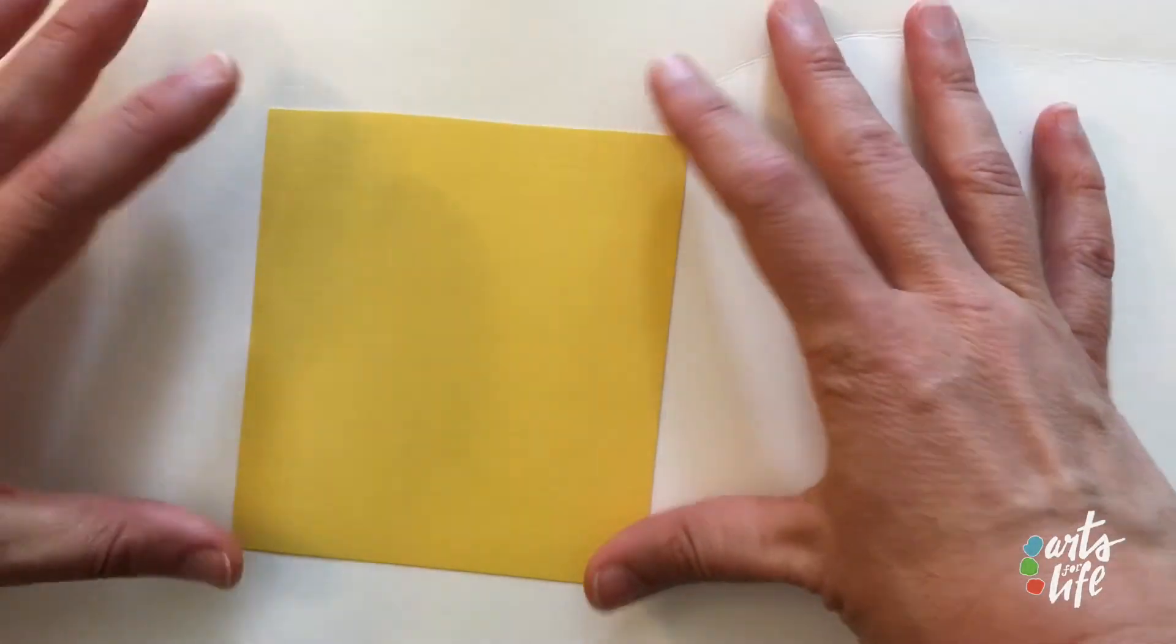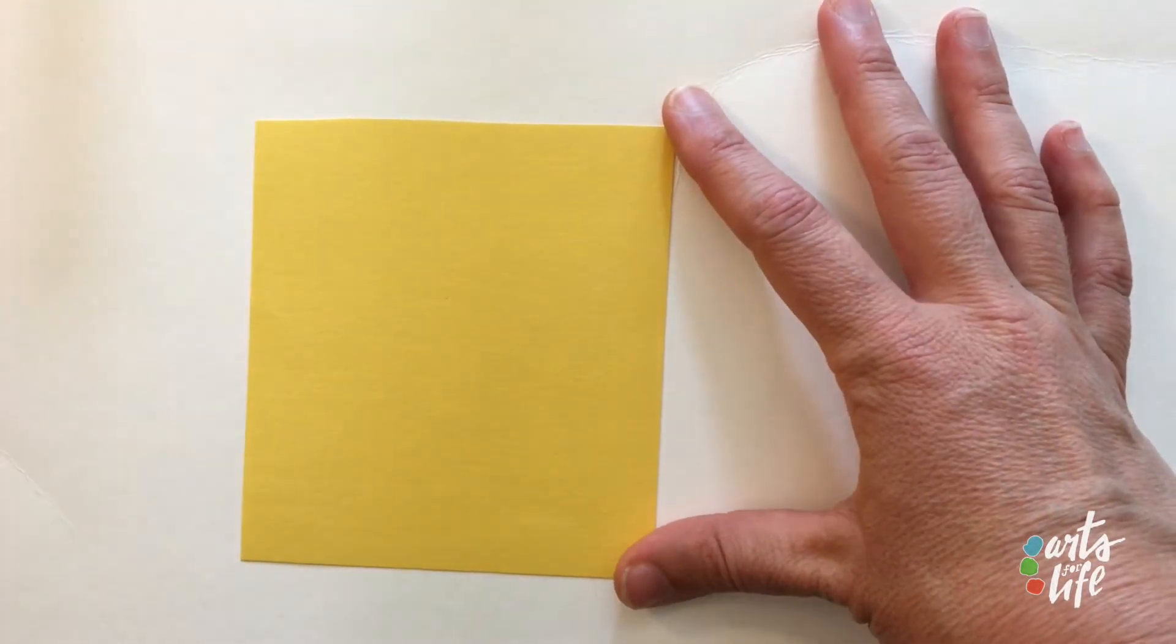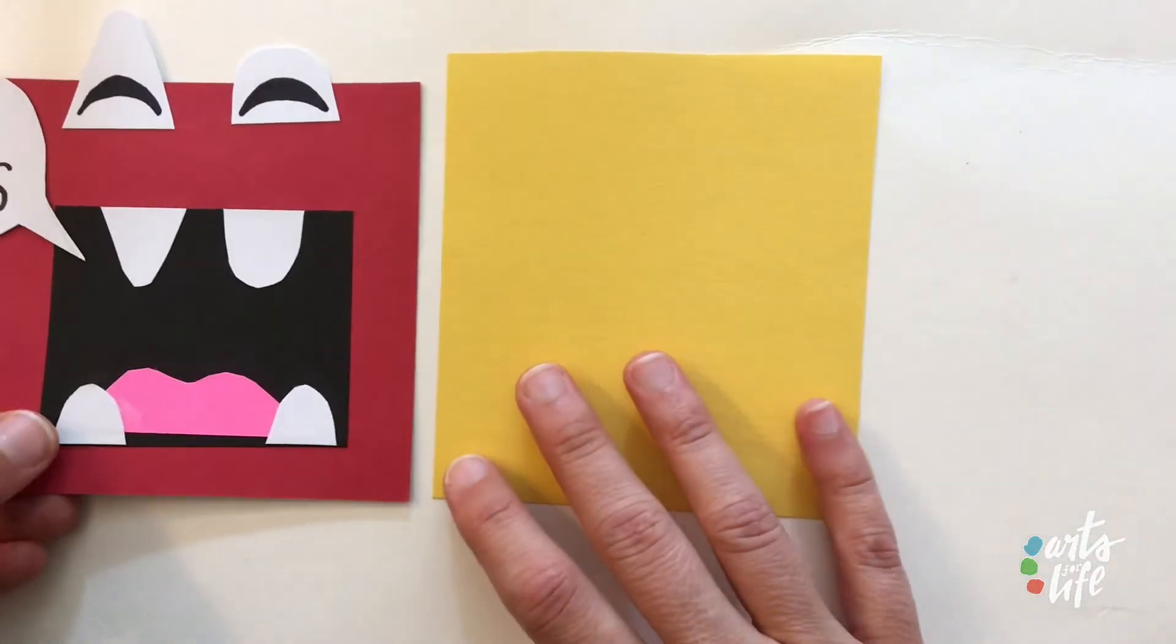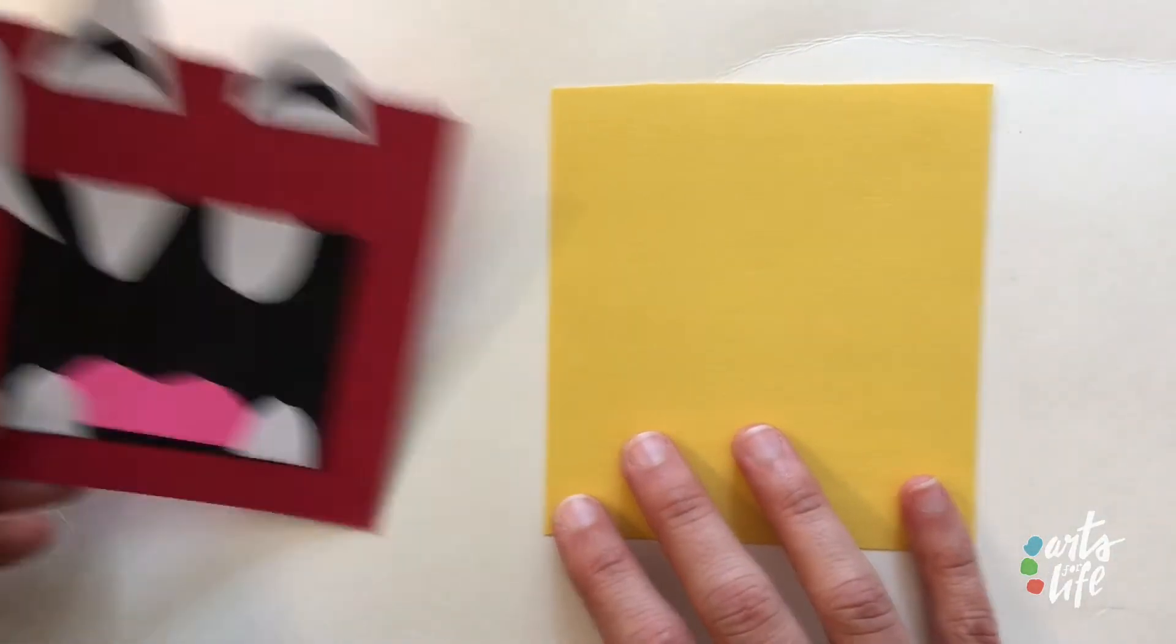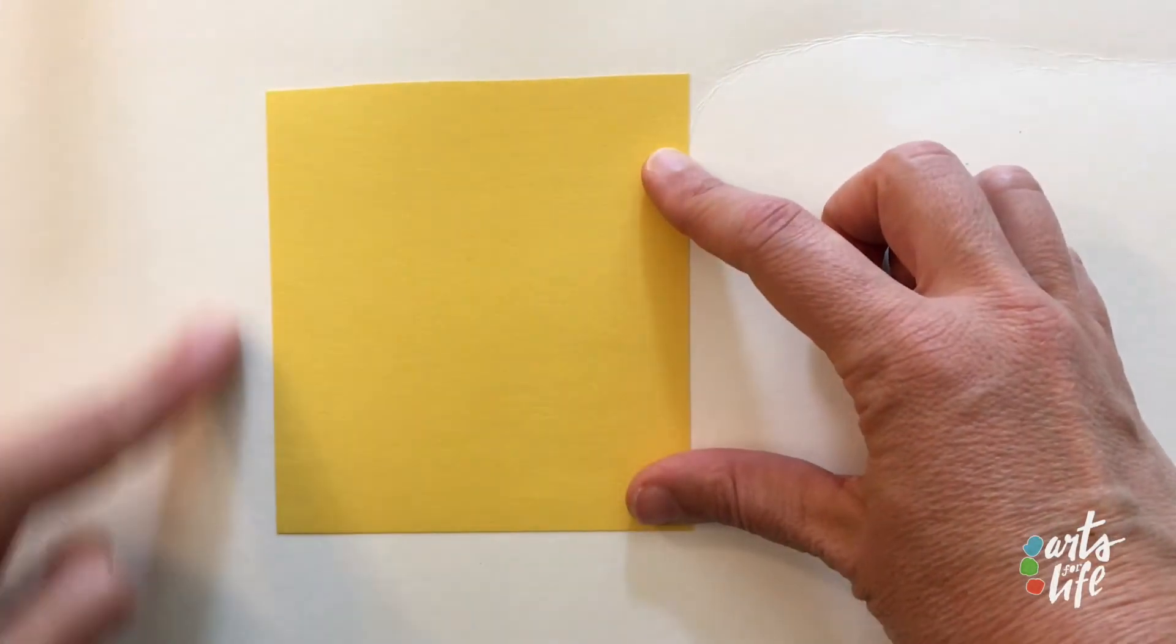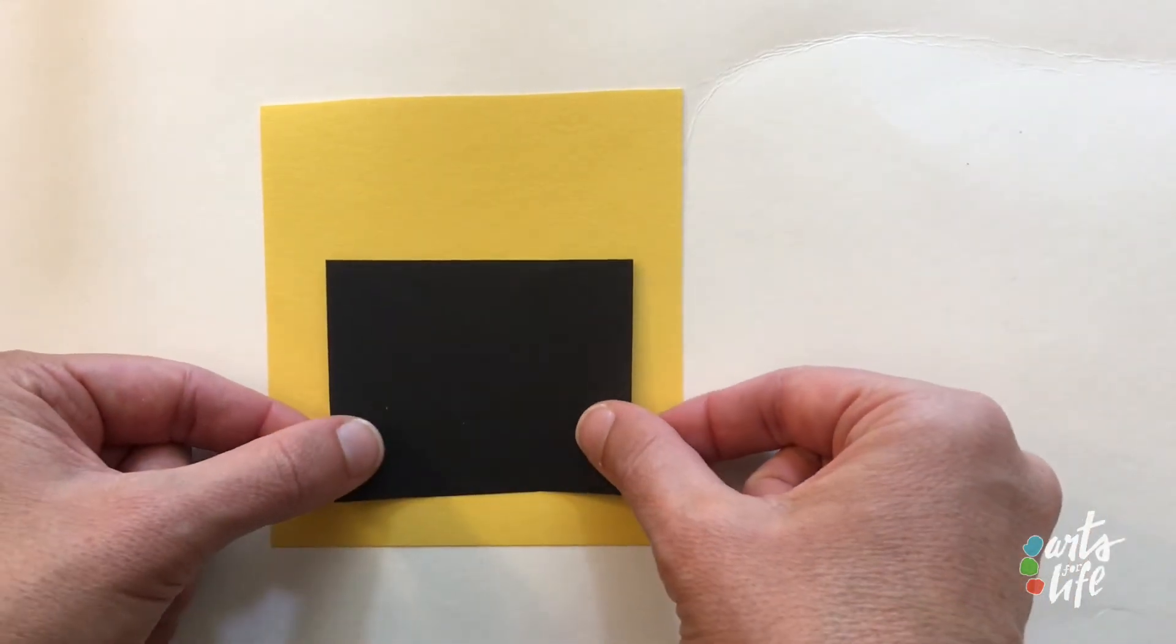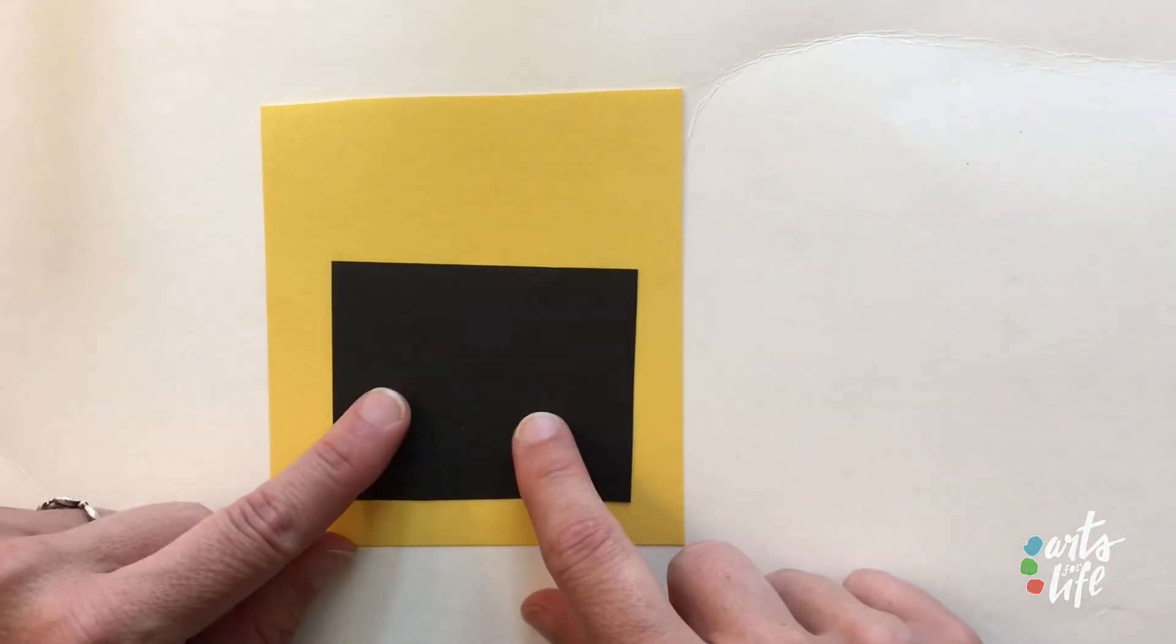First, what you'll do is make a big square. This is going to be the head of your monster. Any size actually would work. Go ahead and cut out a square out of your construction paper and a little bit smaller than that. You'll need a little rectangle or square of black construction paper. This is going to be the mouth.